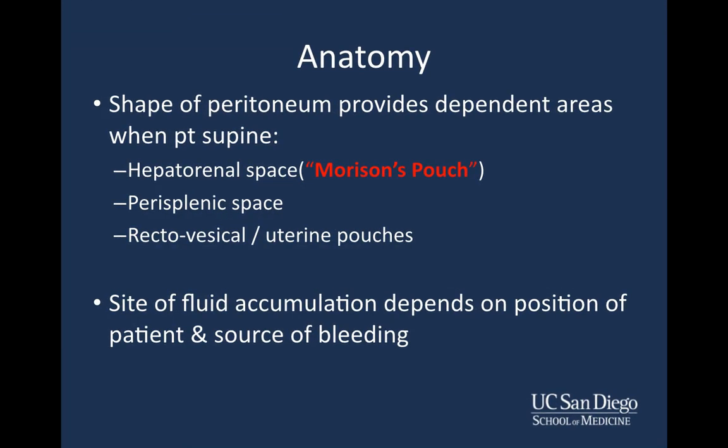When we think about the anatomy and why we do this exam the way we do, the shape of the peritoneum provides dependent areas when the patient is supine. When lying flat on your back, there are a few spaces anatomically where fluid will preferentially collect. One is the hepatorenal space, often referred to as Morrison's pouch. Another is the perisplenic space, as well as the rectovesical or rectouterine pouches. The site of fluid accumulation depends on patient position, the source of bleeding, prior abdominal surgery, and the patient's sex — these factors determine the highest-yield, most sensitive areas to look for small amounts of free fluid.